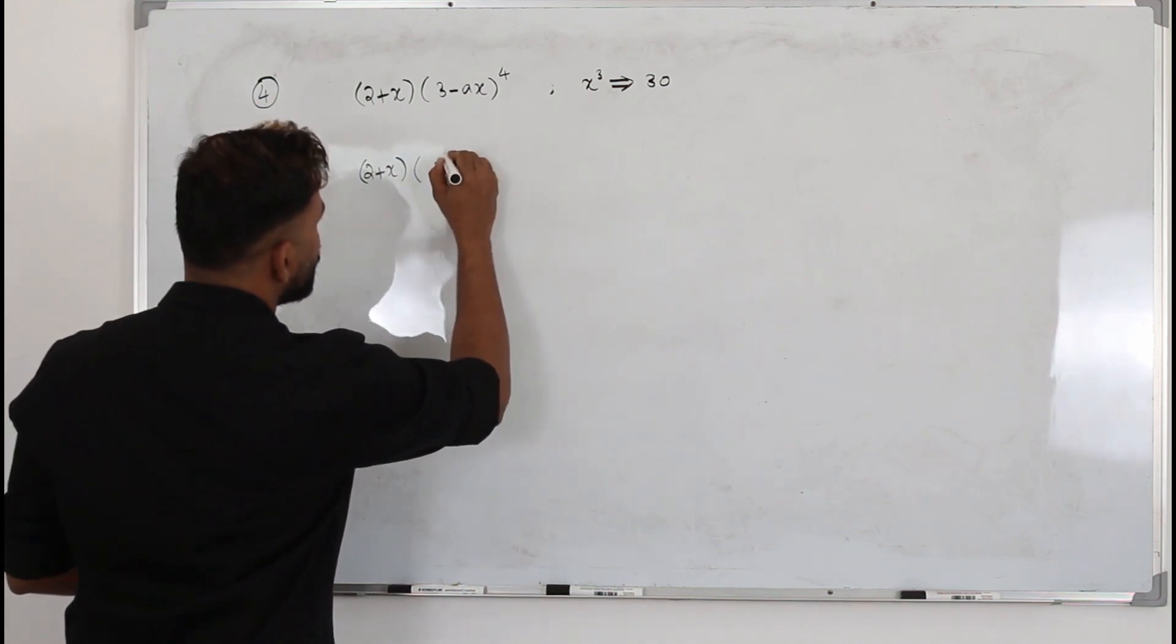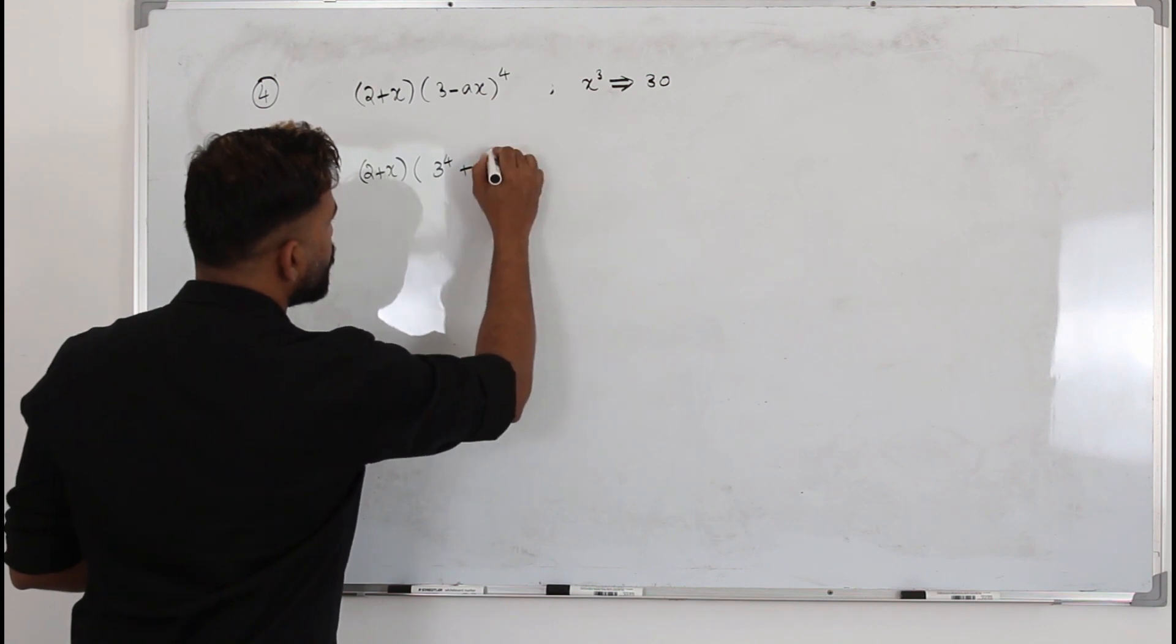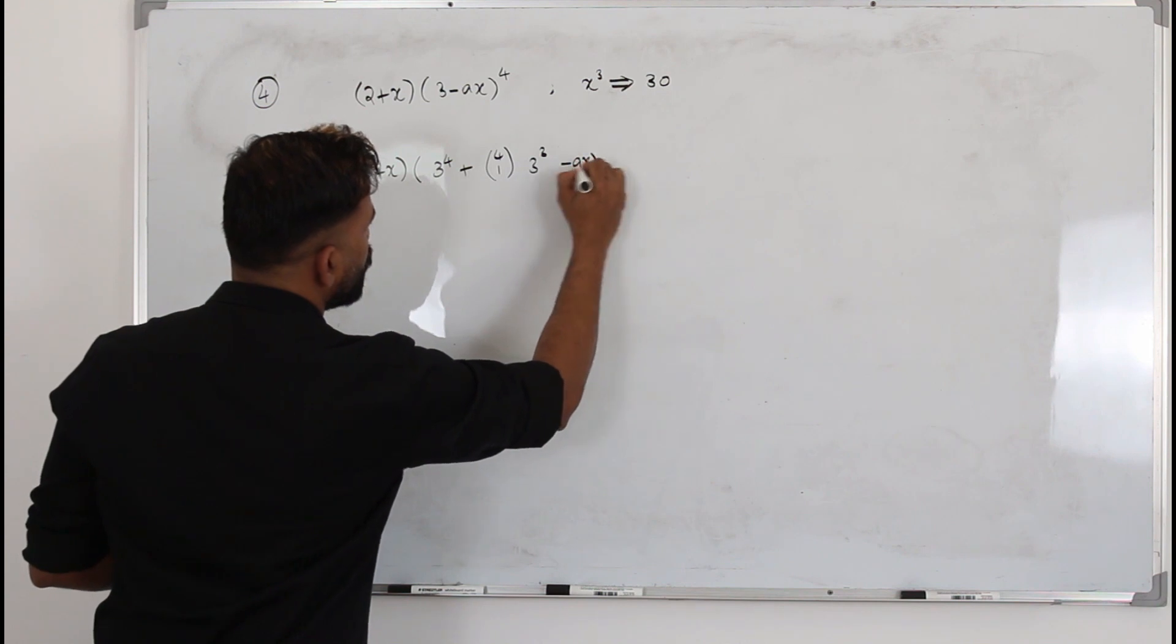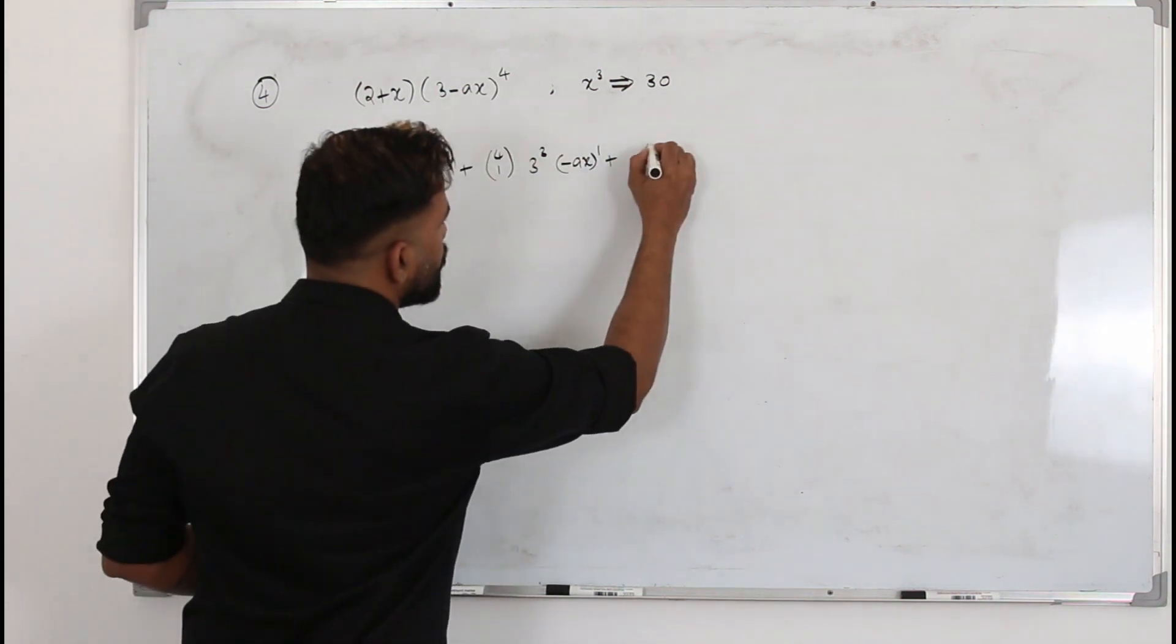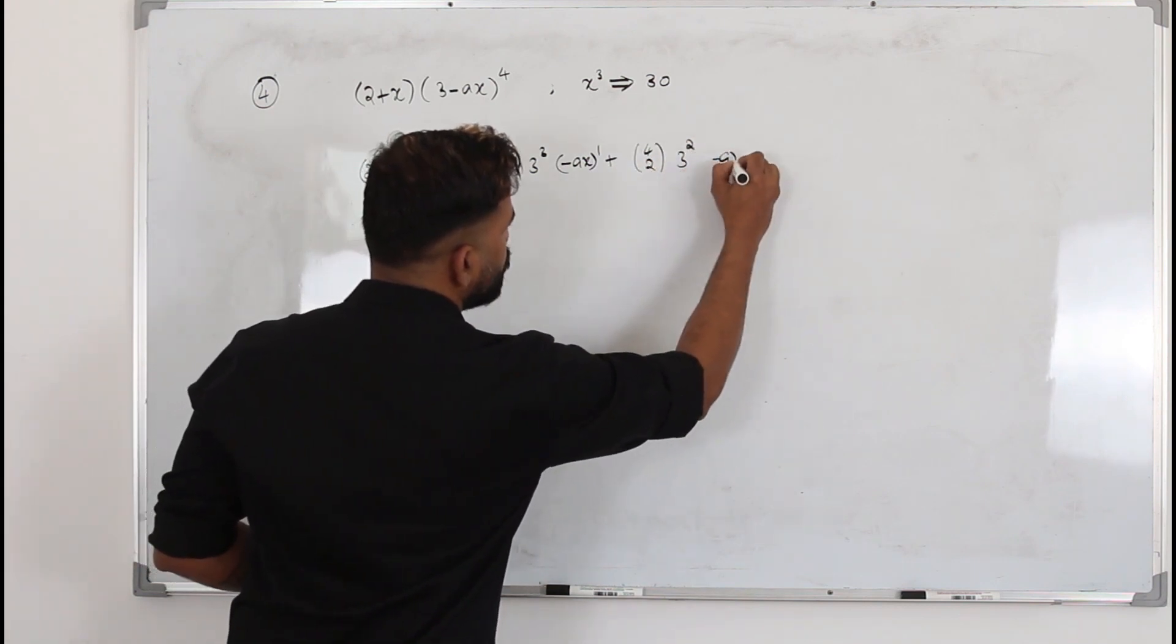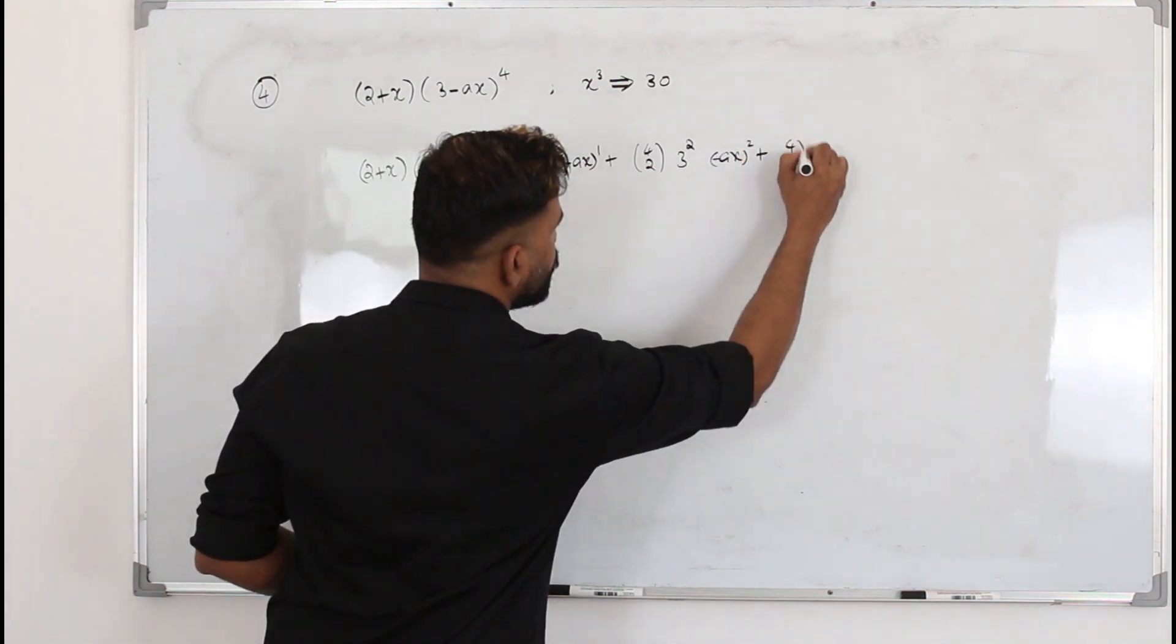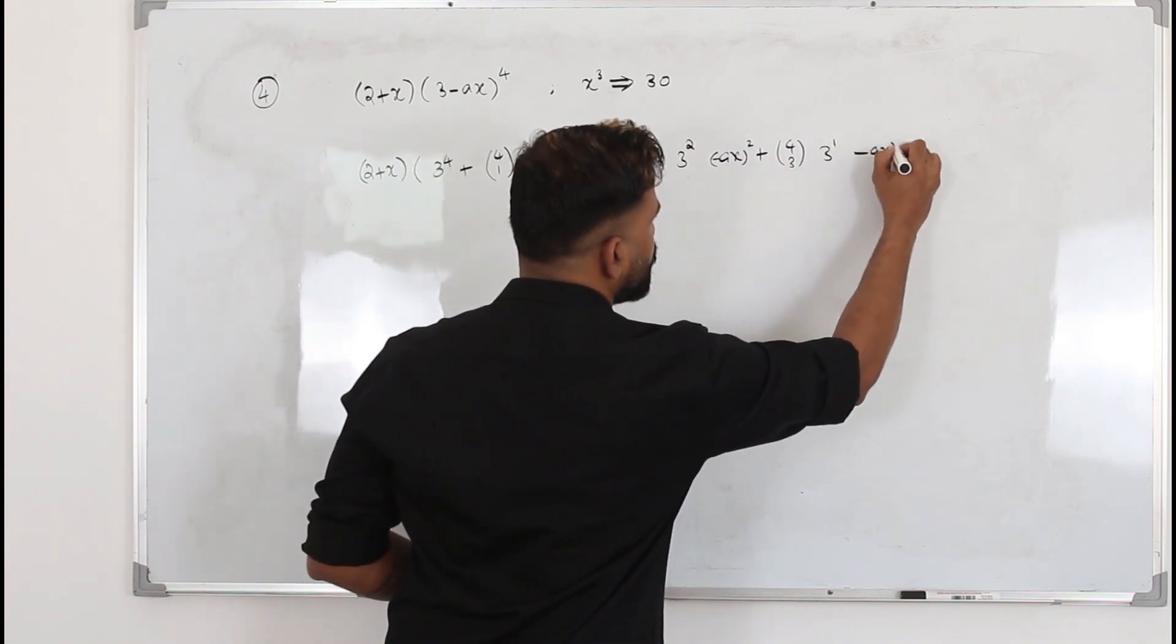The binomial expansion is (a+b)ⁿ: first term aⁿ, plus nC1 a^(n-1) b¹, plus nC2 a^(n-2) b², plus nC3 a^(n-3) b³.